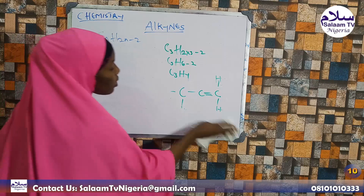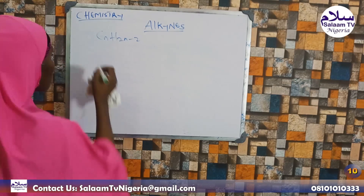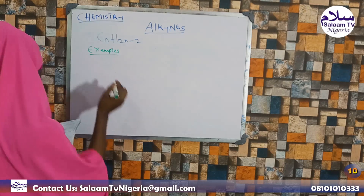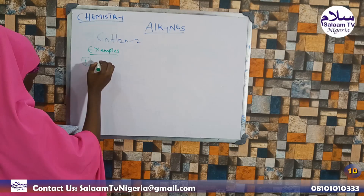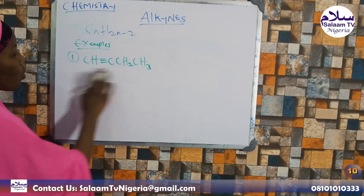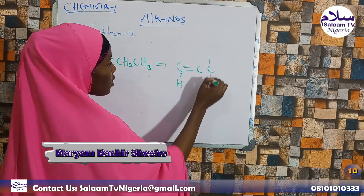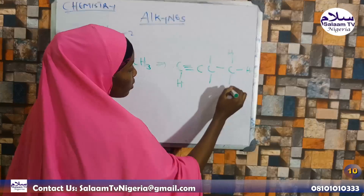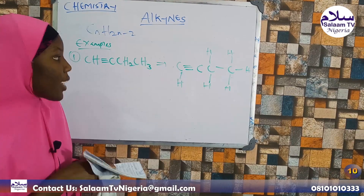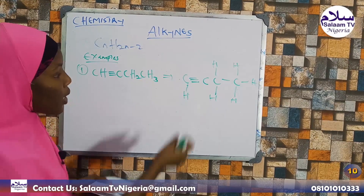Using the general formula CnH2n-2, we can identify compounds. For example, CH3-CH2-CH3 — one of the structural examples. The rule for naming alkynes is: the substituent number should be the lowest number. So we assign the lowest possible number to the position of the triple bond.